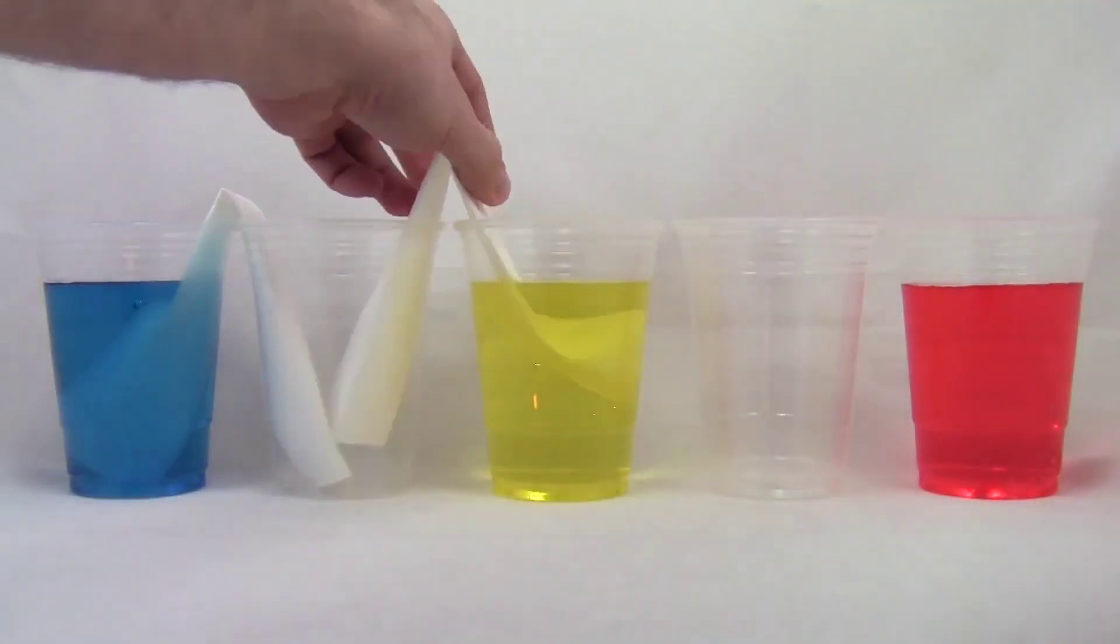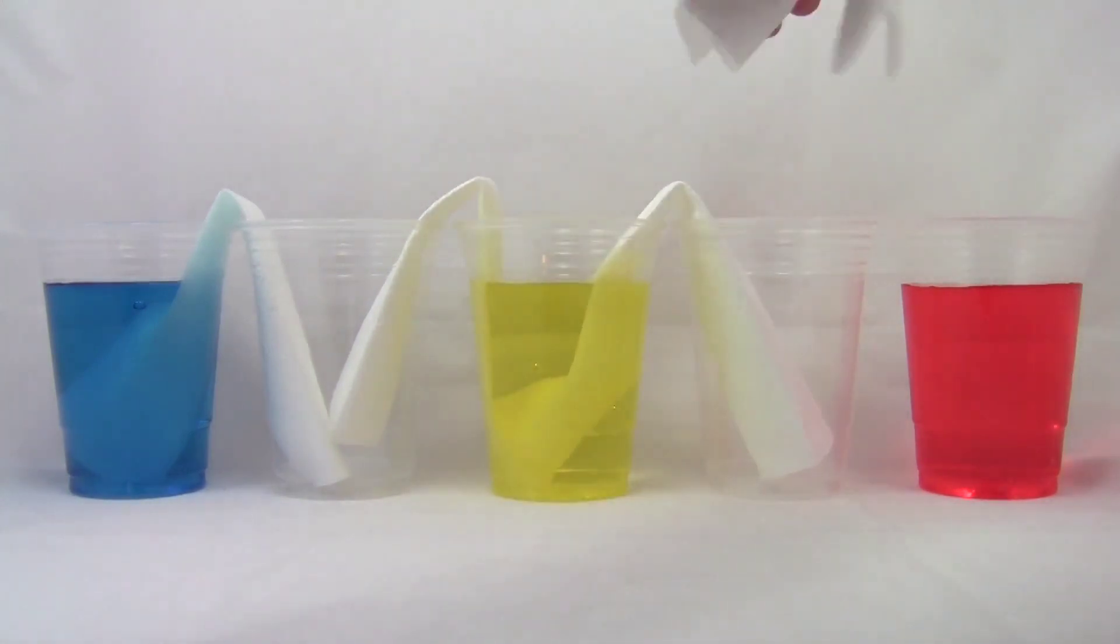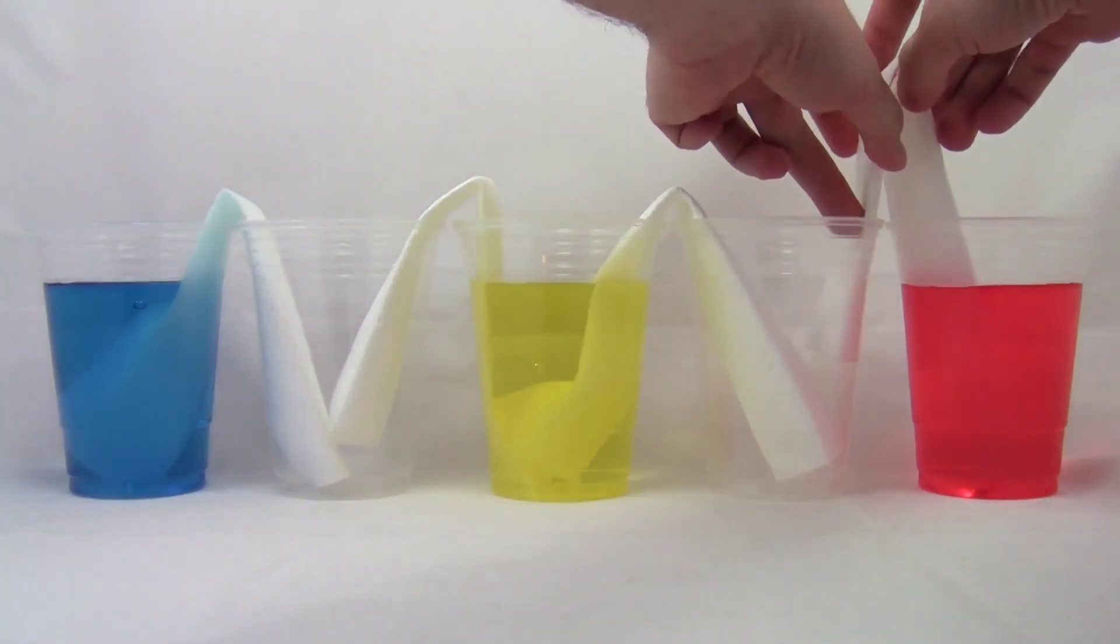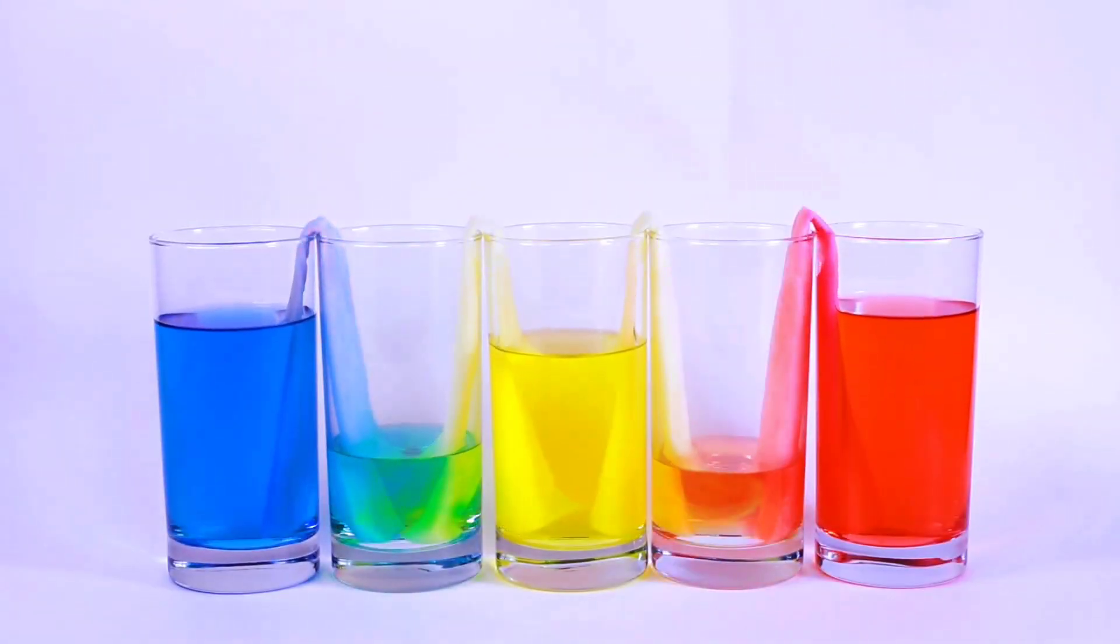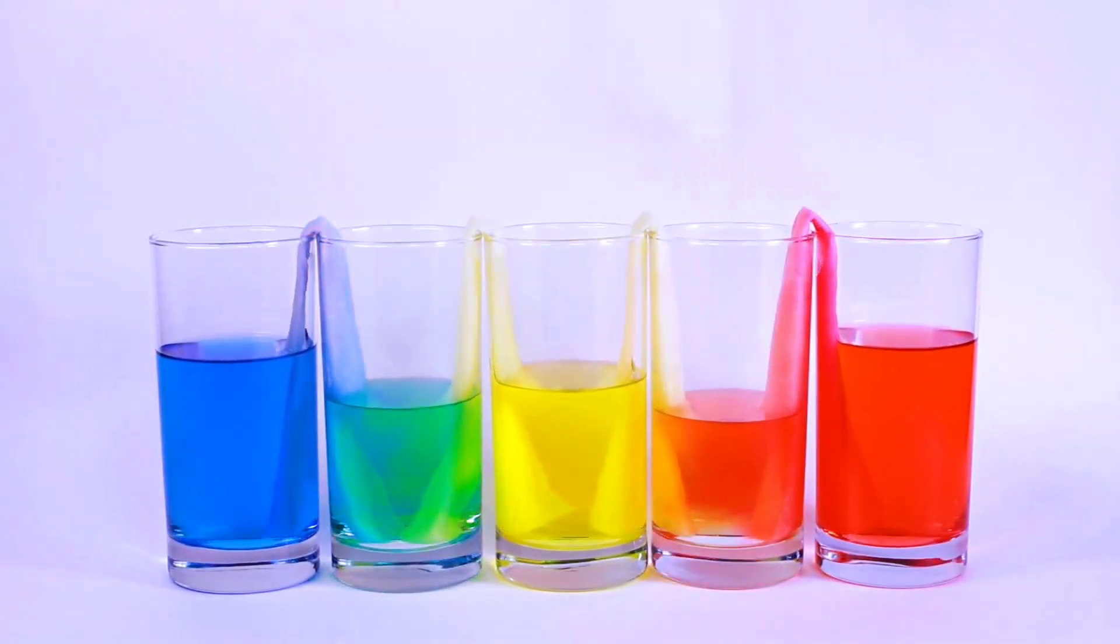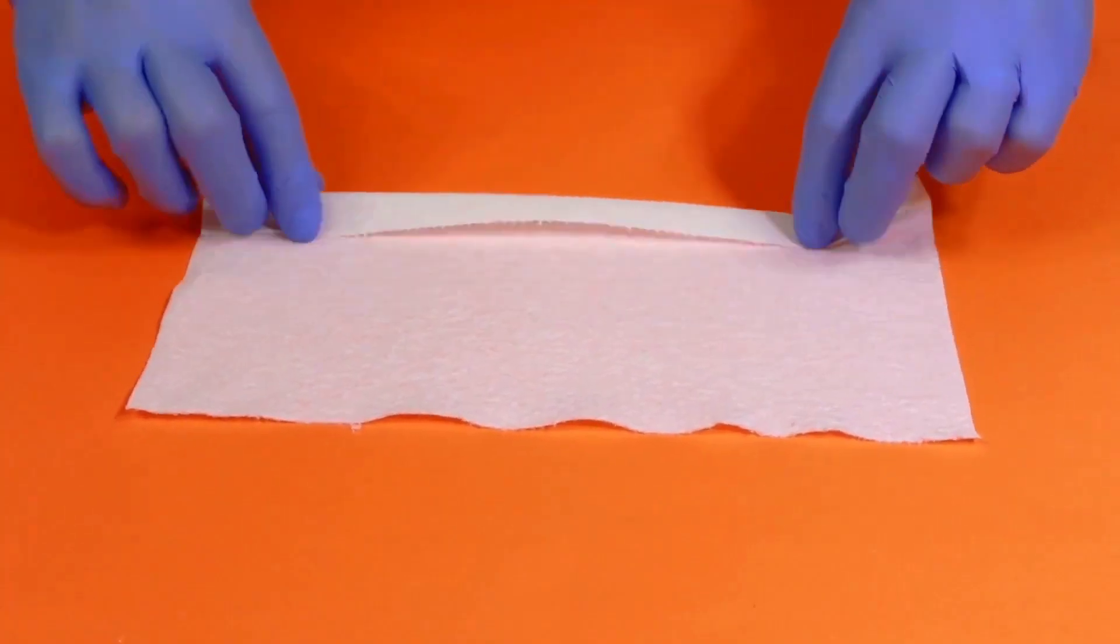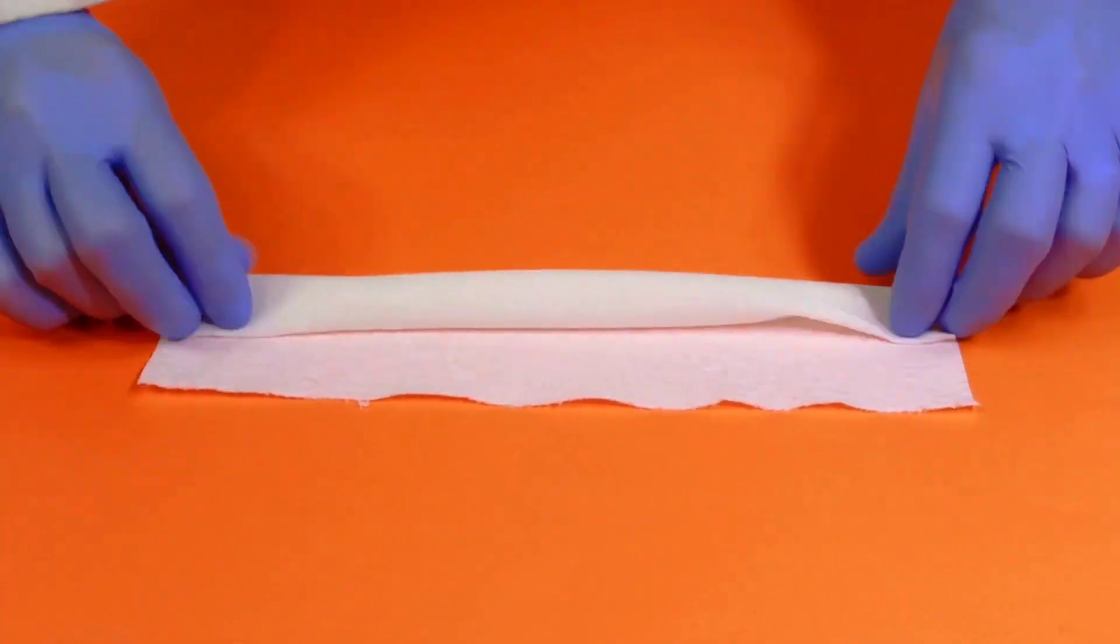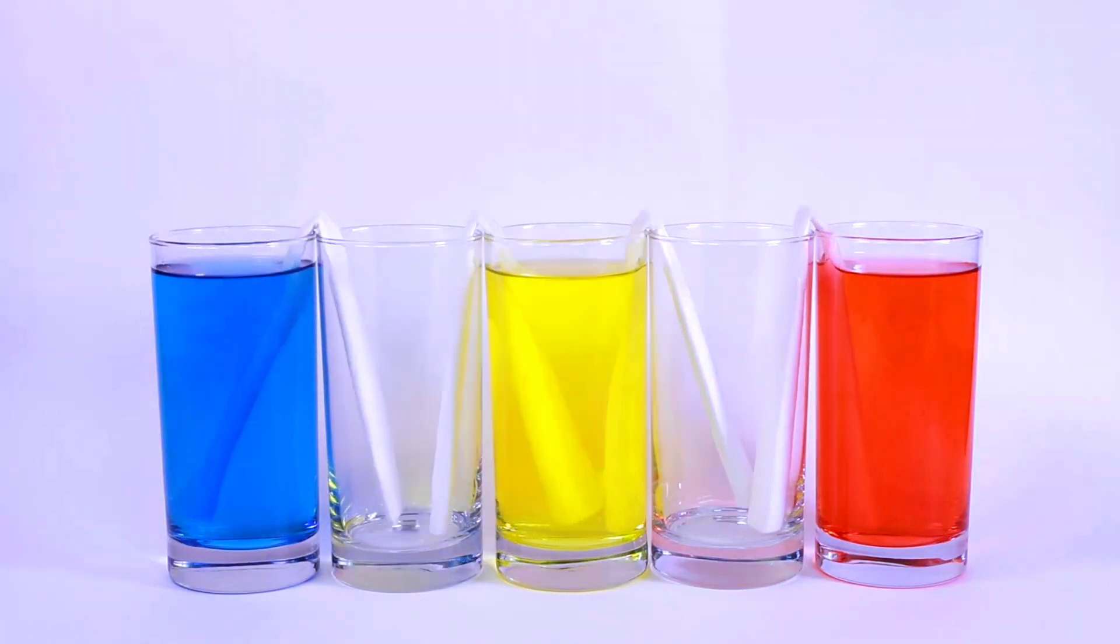Start by filling two of the glasses with water and adding different colors of food coloring to each glass. Place the two colored glasses about an inch apart from each other. Next, fold a few paper towels lengthwise and dip one end into the colored water in each glass. Now, place the other end of the paper towels into the empty glass in the middle, making sure that the paper towels are touching the water in both colored glasses.